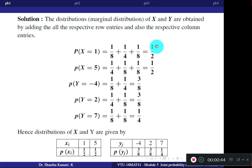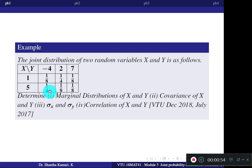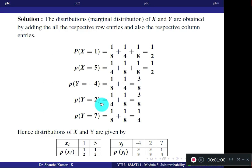Similarly, find the probabilities for the values of Y. For Y equal to minus 4, add 1/8 plus 1/4, which gives 3/8. For Y equal to 2, adding the two probabilities gives 3/8. For Y equal to 7, 1/8 plus 1/8 gives 1/4. You can verify that 3/8 plus 3/8 plus 1/4 equals 1.